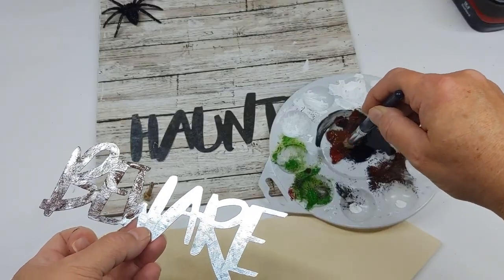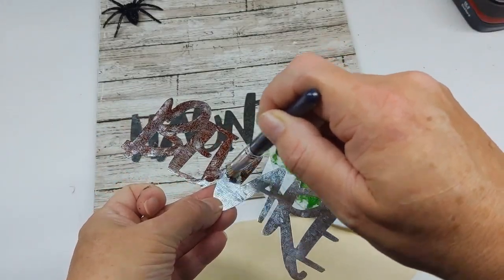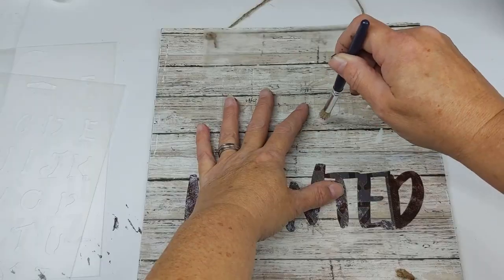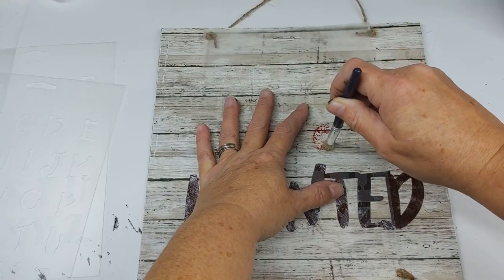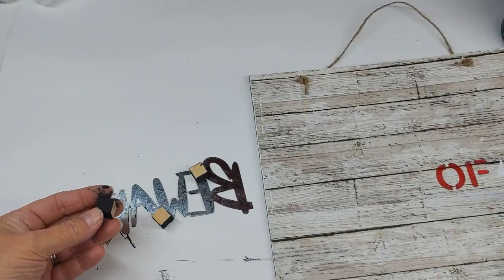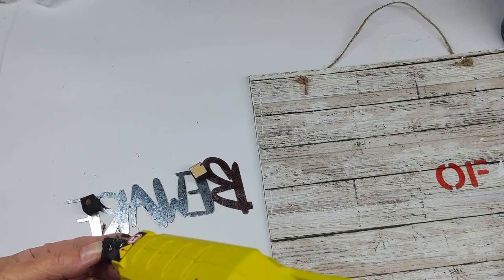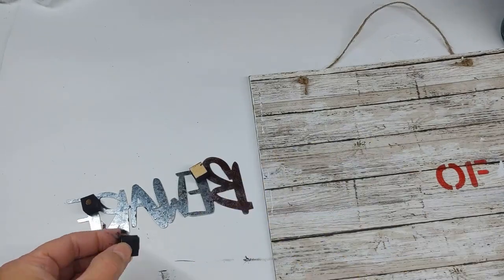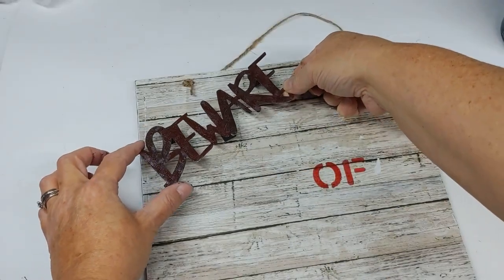I took these metal words from Dollar Tree and hit them with some paint. I used a mixture of red, black, and brown. I took a stencil that I've had for years and never used and painted on 'of'. I took some wood cubes that I got from Hobby Lobby, painted them black, then hot glued them to the back of 'Beware' and attached it to the sign with more hot glue.